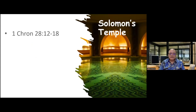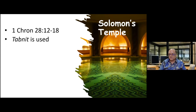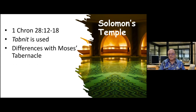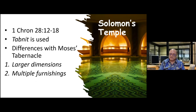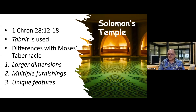Now briefly, Solomon's temple. When David gave instructions to Solomon to build the temple, he told Solomon to build it according to the tabnith that God gave him — the same language as in Exodus. But there were major differences with Moses' tabernacle. For one thing, size: Moses' tabernacle was small compared to Solomon's temple. There were multiple furnishings — the only non-duplicated items were the ark of the covenant and the altar of sacrifice. There were also unique features in Solomon's temple not part of the original tabernacle. Both David and Moses were told to build according to the tabnith — so did David see a different pattern than Moses?